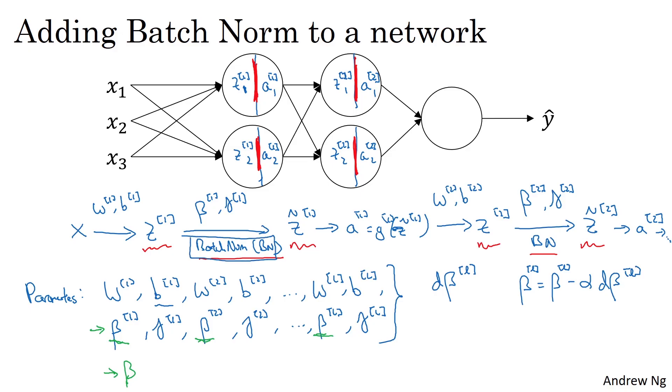Even though in the previous video I'd explained what the batch norm operation does, computes mean and variances and subtracts and divides by them, if you're using a deep learning programming framework, usually you won't have to implement the batch norm step or the batch norm layer yourself.